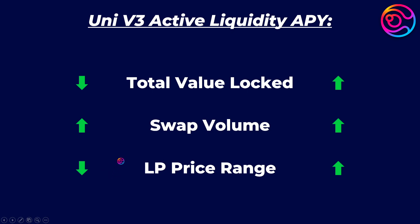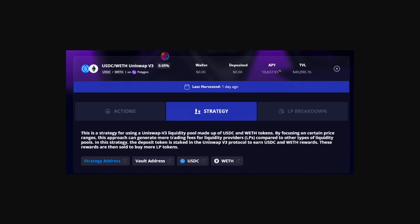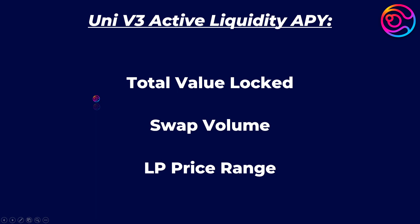And a tighter price range will increase the APY because with a tighter price range, you are further concentrating the liquidity to capture more fees within the active price range. However, a tighter price range increases the risk of the price moving outside of your LP's range and therefore requires more rebalancing. In contrast, a higher TVL, lower swap volume, and broader price range will all decrease the APY for the opposite reasons. The amount of fees earned at any given point in time are used to calculate the APY, and the APY is representative of what the real yield would be if the same TVL, swap volume, and price range were maintained for an entire year. Of course, that will not happen as these factors can be highly variable, which is what causes the APY to also be highly variable over time.